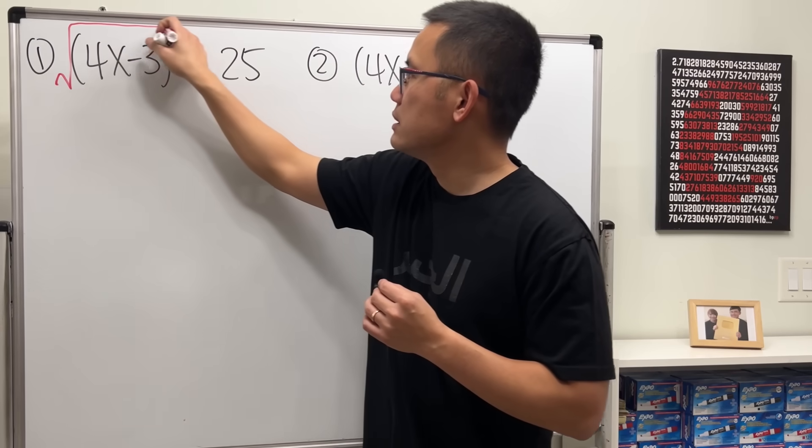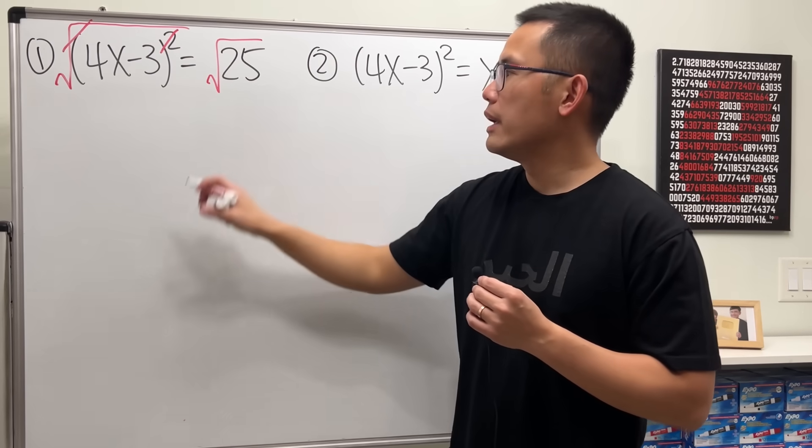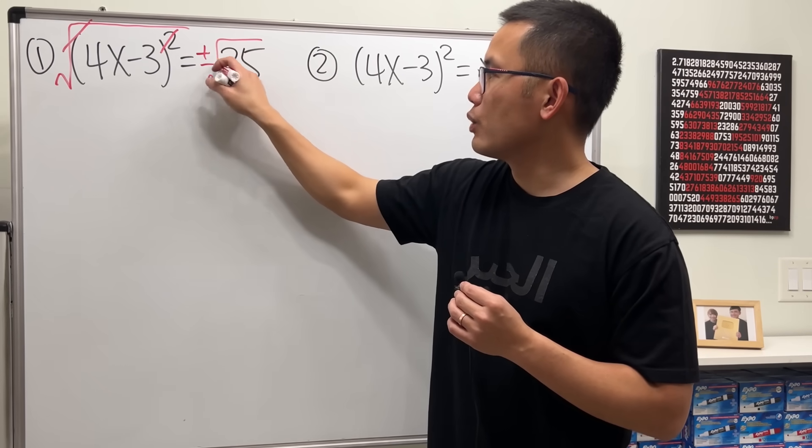This is the time that we can take the square root on both sides. Just go ahead and do this, so that the square and the square root will cancel.